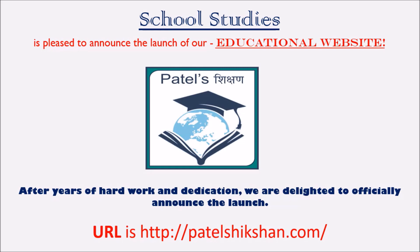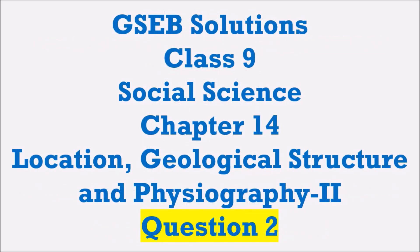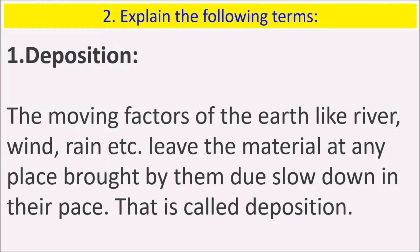Today we will see a video related to GSB Solution Class 9 Social Science Chapter 14, that is Location, Geological Structure and Physiography, Part 2. We will discuss Question 2 in this video. Question 1 has already been discussed in a previous video. The question 2 is: explain the following terms.